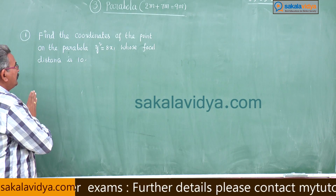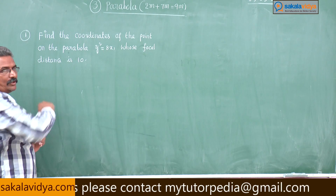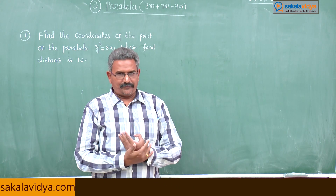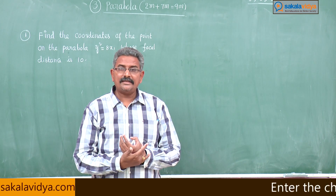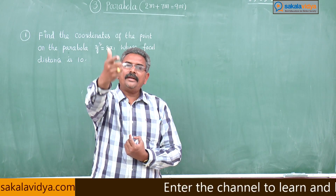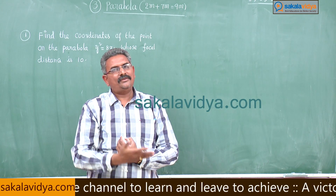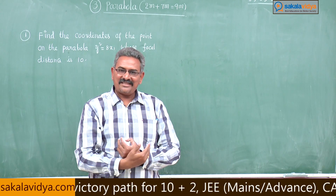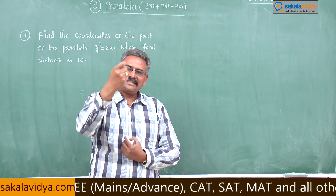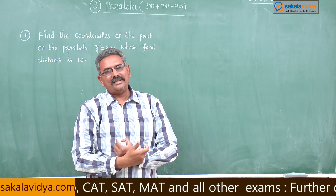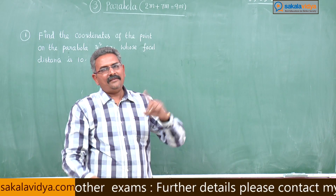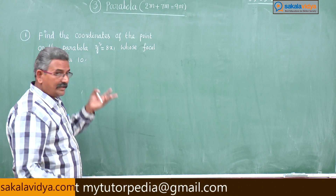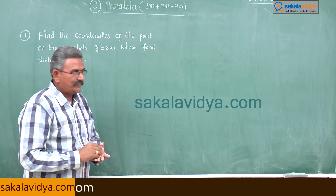Focal distance is 10. Let us suppose that P(x₁, y₁) is any point on the parabola. Focal distance means the distance from the focus to any point on the parabola. If this question appeared for one mark, you can write: the distance from the focus to any point on the parabola is called the focal distance. The focal distance is given by the formula x₁ + a = 10. We find x₁ from this, then substitute into the parabola equation to get the y values and determine the coordinates.